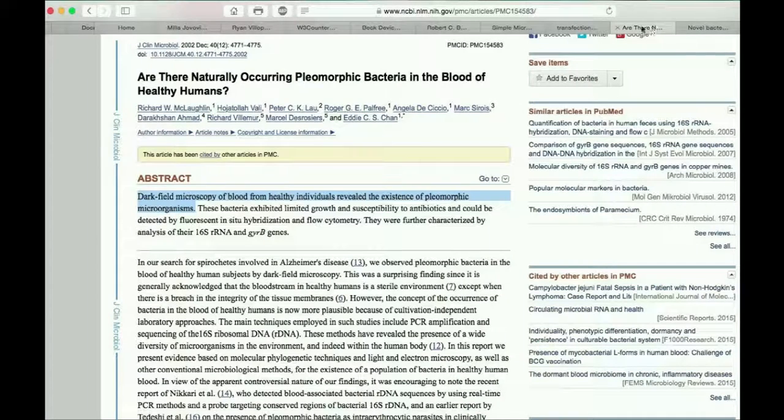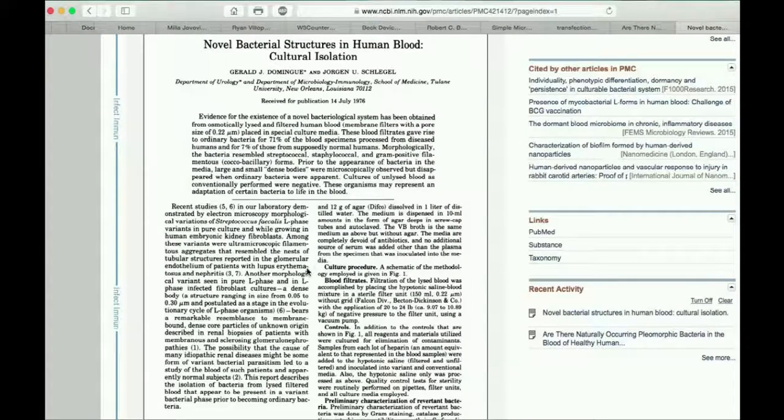Here are a couple of research papers talking about bacteria in the blood. The very first sentence on this one says that dark-field microbes gave blood from healthy individuals who revealed the existence of pleomorphic microorganisms. Which means pleomorphic is form-changing. This one, if you look down here, this report describes the isolation of bacteria from lysed-filtered blood that appear to be present in a variant bacterial phase prior to becoming ordinary bacteria. It's also talking about polymorphism. So there are studies pointing in that direction. Even though it's generally considered that the blood is free of bacteria except in diseased people. That's the general opinion of doctors. But from what I'm seeing, it's not 100% true.